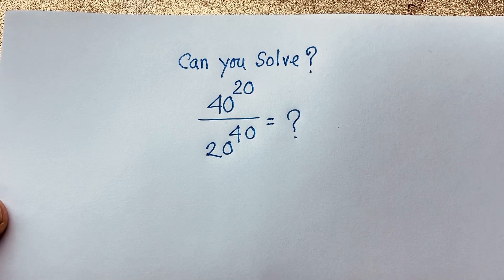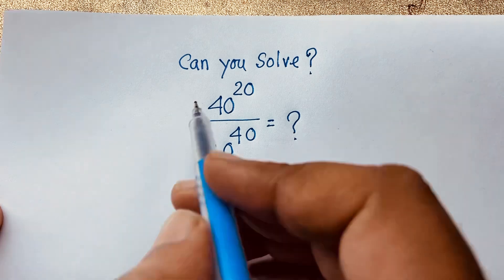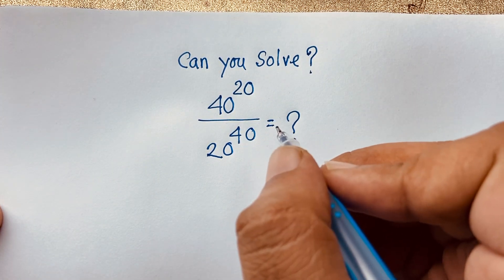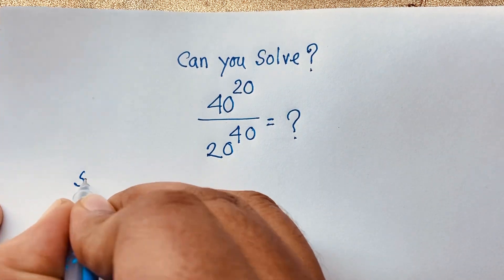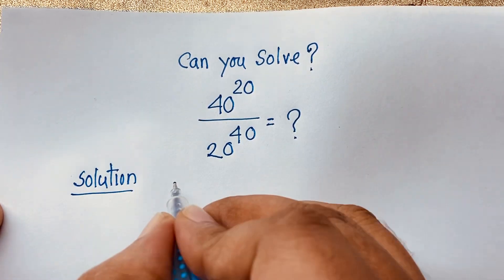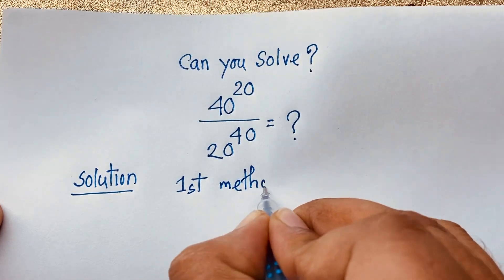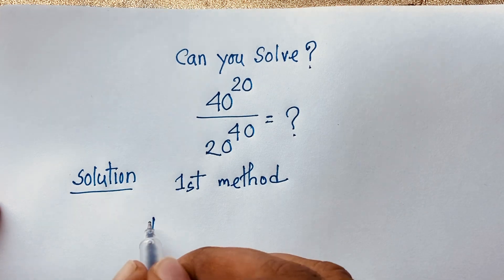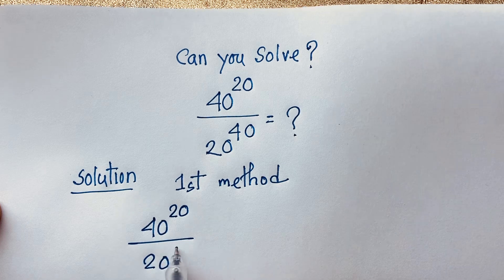Hello everyone. In this video we have solved a nice exponential math problem. Here is 40 power 20 over 20 power 40 — what does this equal? How to simplify this math question? So the solution: I will solve this question using two methods. This is the first method.